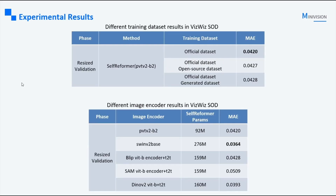Moving on to the experimental results. The term 'resize validation' pertains to our testing on the resized validation set, conducted to facilitate batch inference and speed up the overall testing process. Although performance on the resized validation set may be slightly lower, the overall trends of the metrics remain consistent. We started by evaluating different training datasets, and as shown in this table, the official dataset gave the best performance, so we only used it in further experiments. Comparing different image encoders, Swin-V2 Base had the best results as it has the highest number of parameters. Among the ViT architectures, DINOv2 stood out, leading us to choose the larger DINOv2 ViT-Large as our image encoder for further experiments.